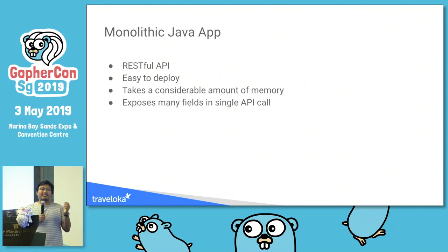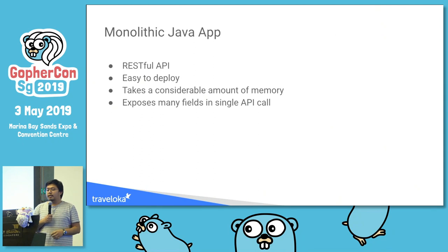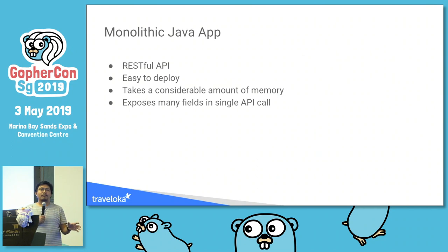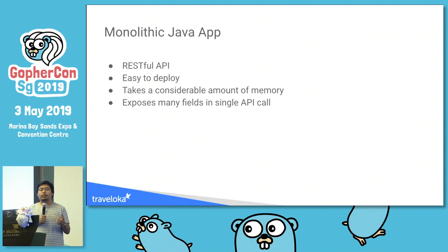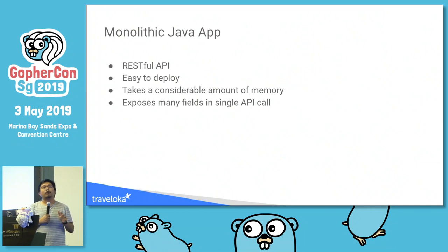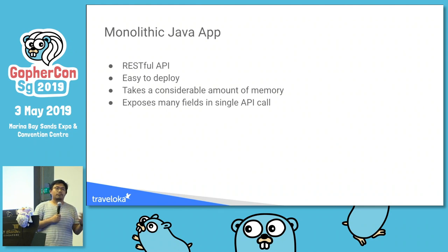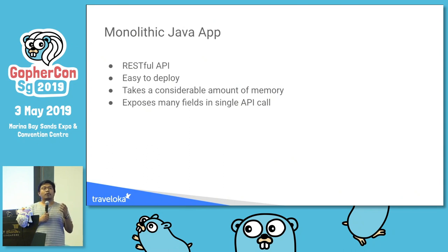The monolith Java app is a RESTful API — easy to deploy since we only need one Dockerfile to a Kubernetes cluster. The problem with Java is it takes a considerable amount of memory: even if the application does nothing, it takes about 800 megabytes, which is significant. Another problem is that for a single API call we have to expose a lot of data — returning everything like first name, last name, address — and we don't want that because we want to protect the data.